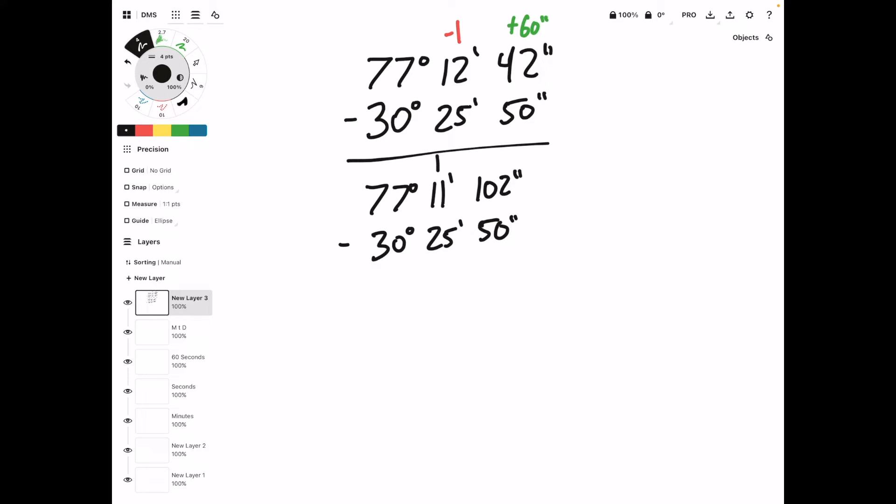And then before we do the subtraction, let's slide over to the minutes column and see if we have enough on top. In this case, we don't. We're trying to subtract 25 from 11. So again, we need to borrow from the next column over, which is in this case the degrees column. So we're going to subtract 1 degree and then add 60 minutes.